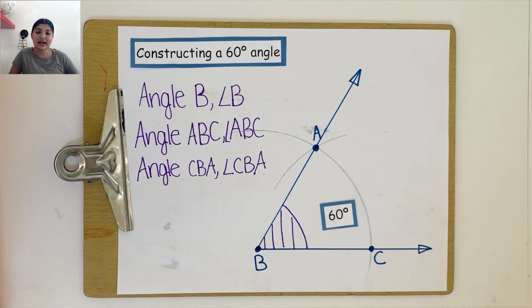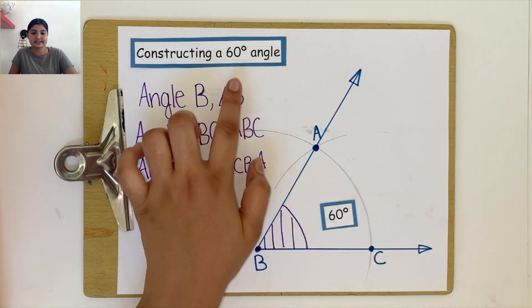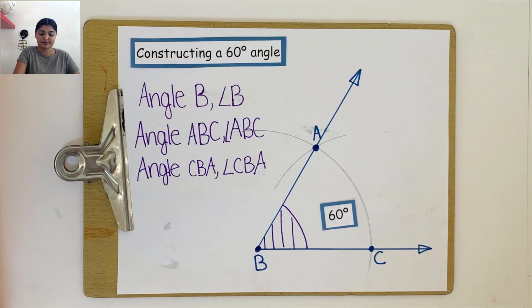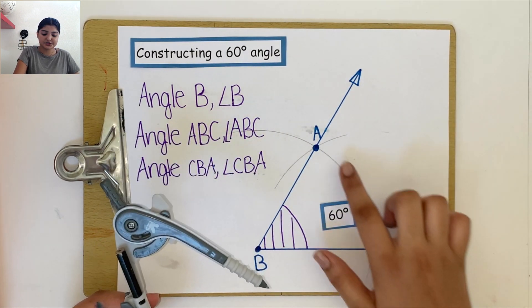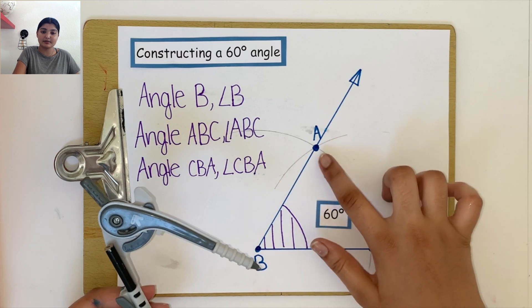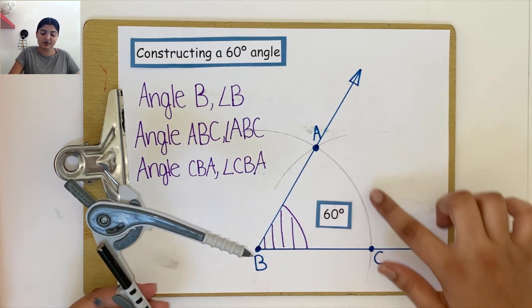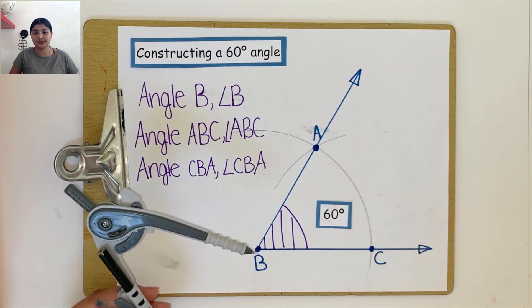Keep in mind that when we're constructing a 60-degree angle using a compass and we make two arcs that intersect at one point, the angle will always measure 60 degrees.